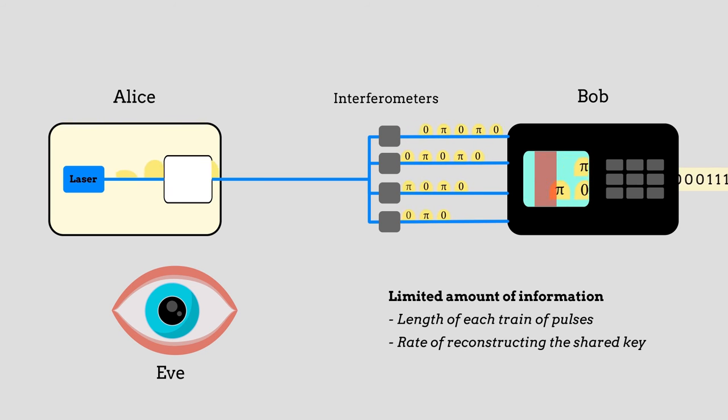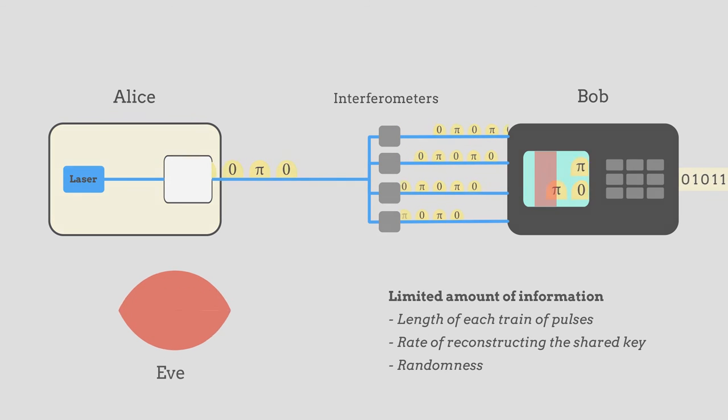The extra bit of randomness introduced by Bob when he delays the original train guarantees that the outside observer Eve will have limited information to reconstruct the key.